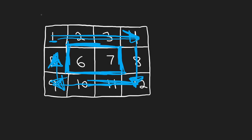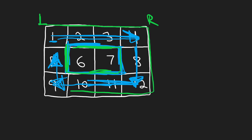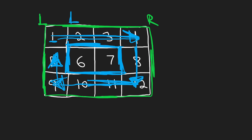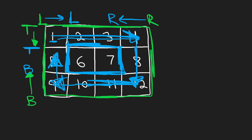Our left boundary was over here and our right boundary was initially over here, but now we've shrunk it. This is our new sub-matrix. Our new left and right boundaries are here — we shrunk it by one, moving the left and right boundaries inward. Similarly, we had a top boundary here and a bottom boundary over here, but we had to shrink that as well. We moved our top boundary down one and our bottom boundary up by one. So now our top boundary is here and our bottom boundary is here, and we still have some elements to go in spiral order.